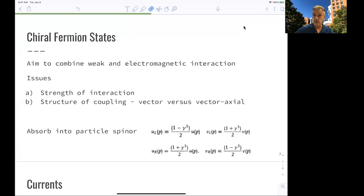The second problem is that the structure of the coupling is very different. We have seen for QED that there's a vector coupling, and for weak interaction that there's a vector axial coupling, this 1 minus gamma 5, this vector minus axial coupling.